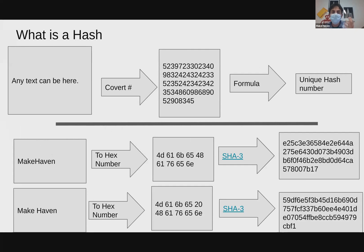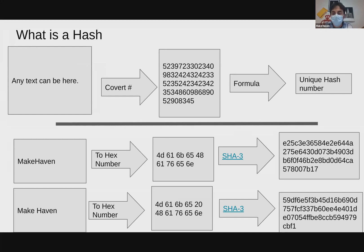Any text gets converted to a number by being put through a formula that creates a unique number. That number can't be back-calculated to recover the original text — it's like if you had 100 numbers and checked them by adding them all together and just seeing what the last digit is, or whether it's odd or even. One such formula is SHA3, a more modern one. There are a number of different formulas, often using prime numbers, to calculate these hashes.